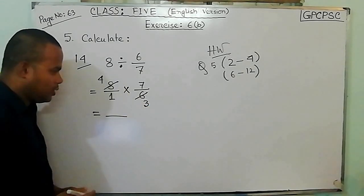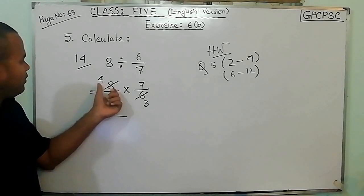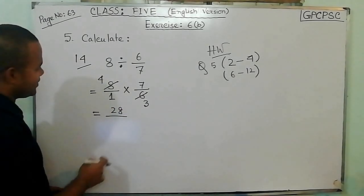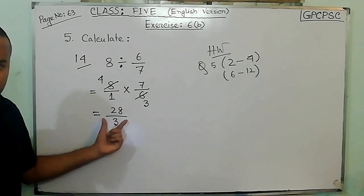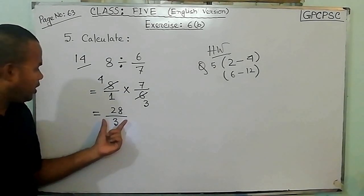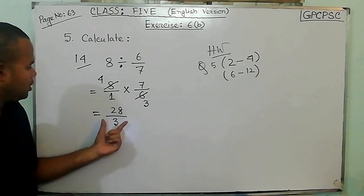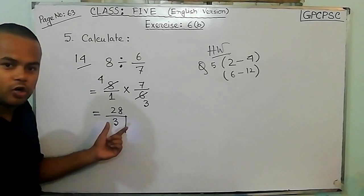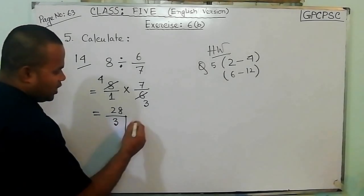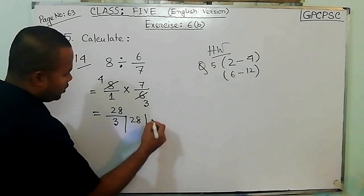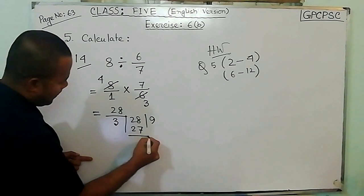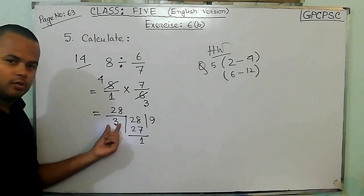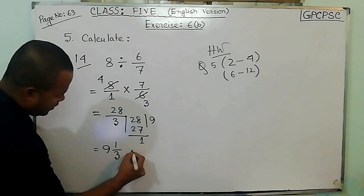So here we have to multiply 4 and 7, and we have to divide. Then we have to multiply 4 by 1 by 3. So here we have 9 all 1 by 3, that is the answer.